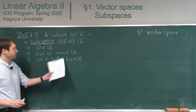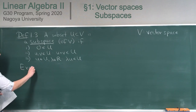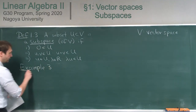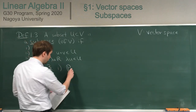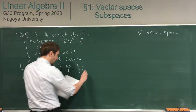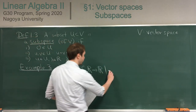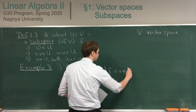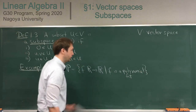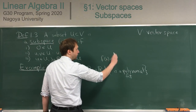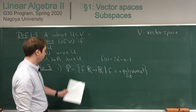So these are exactly the same conditions we had before. For examples, this is example number 3. One example is the set P of all polynomial functions from R to R. For example, the function f(x) = 2x² − x − 1 would be an element in this space.